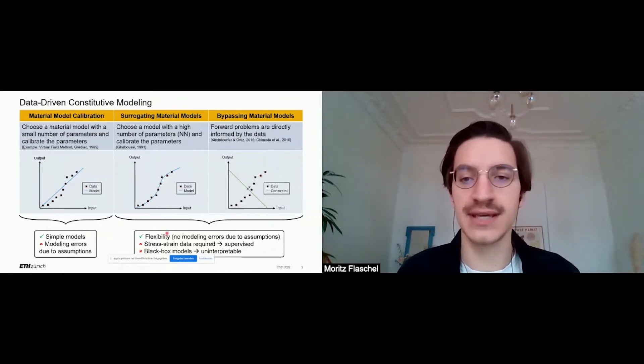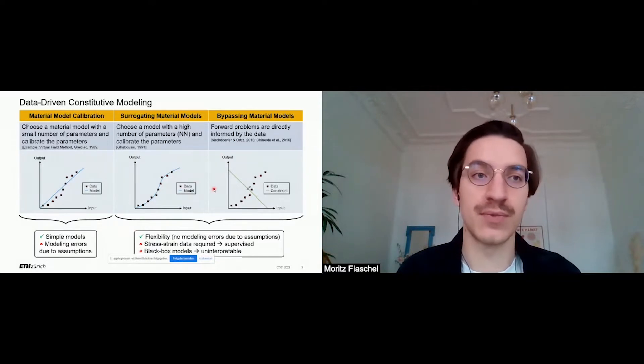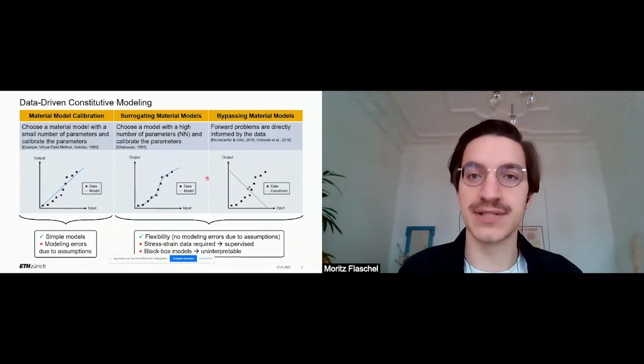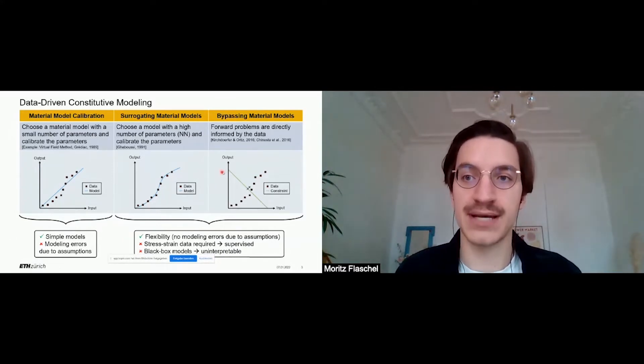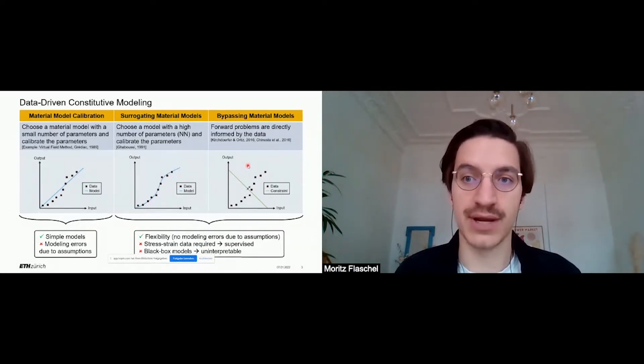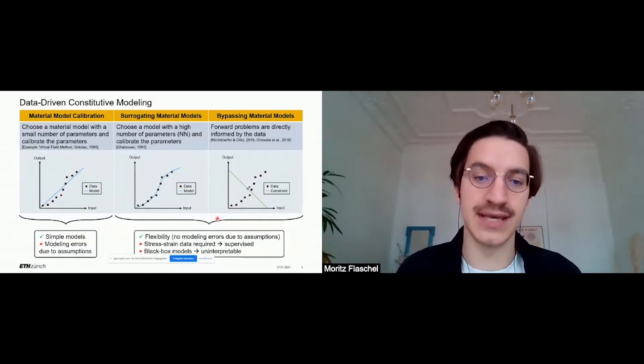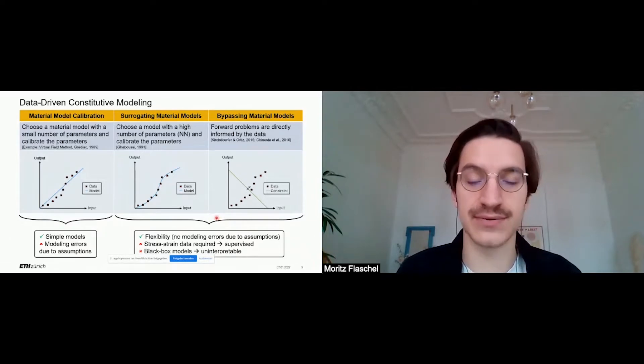For this reason, in recent years, machine learning-based methods became more and more popular in constitutive modeling, such as surrogating material models with neural networks or bypassing the formulation of material models altogether and running forward problems that are directly informed by the data. The advantage of such approaches is that we have high flexibility in describing the material behavior, and we do not introduce any modeling errors.